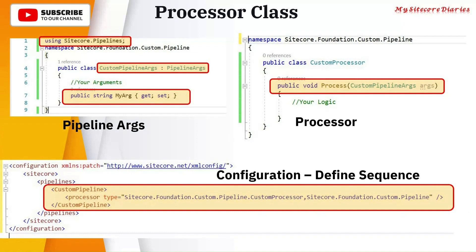To summarize: if you want to write a processor class, first you define your arguments by creating a class that inherits PipelineArgs — these are the default arguments for the pipeline. For this you need a reference of Sitecore.Pipelines. Second, you create your processor class, which has a Process method that executes your logic and takes the custom pipeline argument as input.